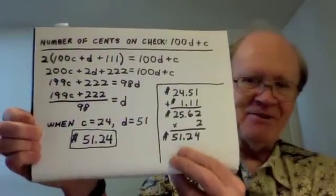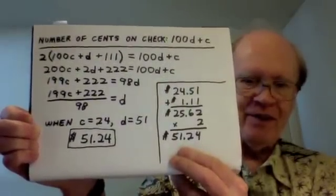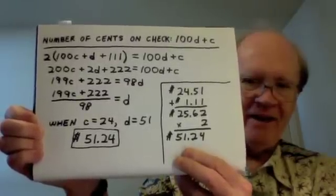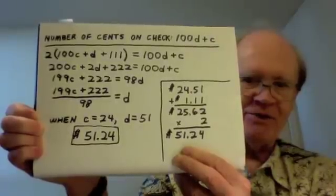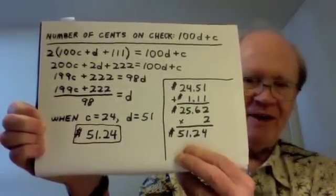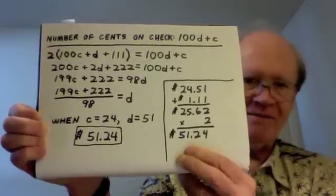And it is easy to verify this solution. We start with the dollars and cents reversed: $24.51, add $1.11, we get $25.62, multiply that by 2, and we get $51.24. So that is my solution to my careless bank teller challenge. Thank you for watching this solution video.